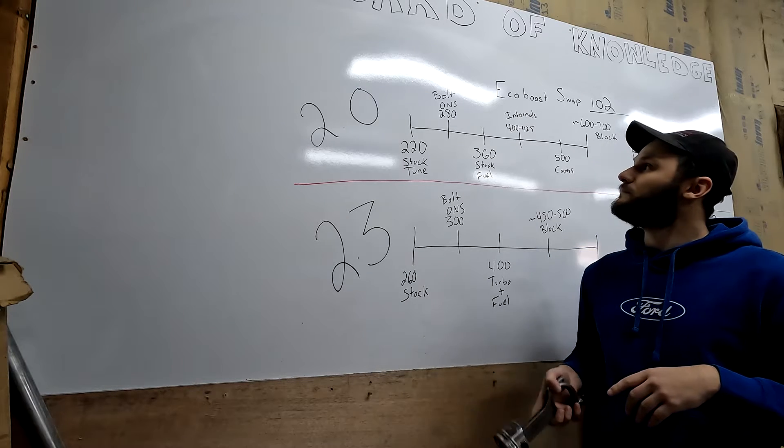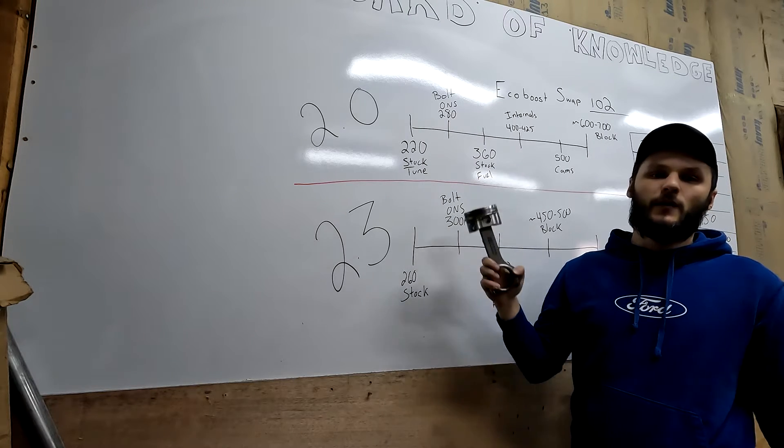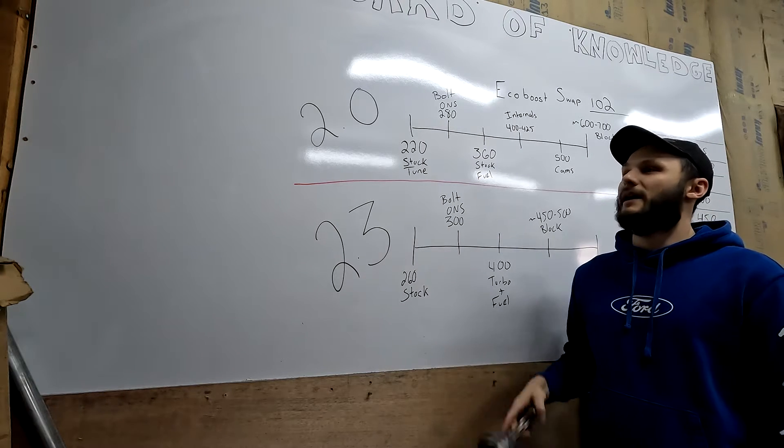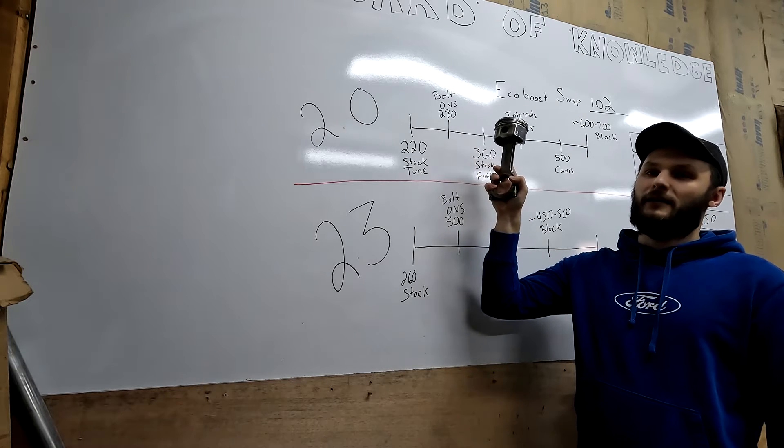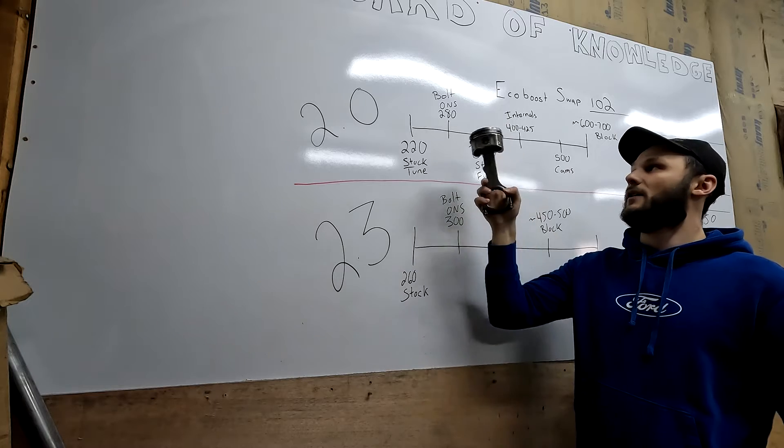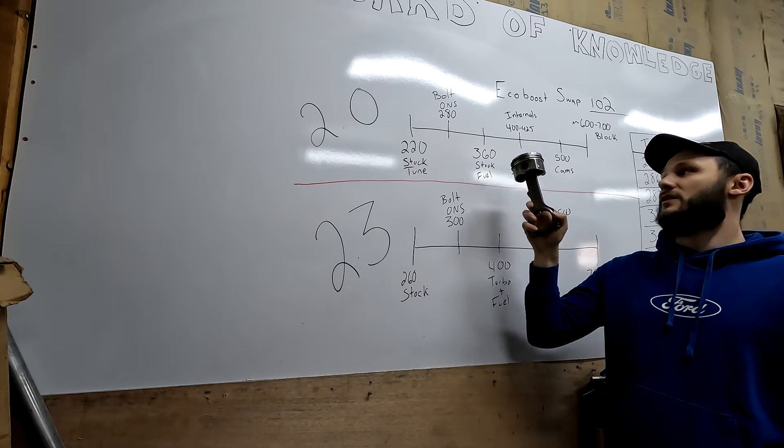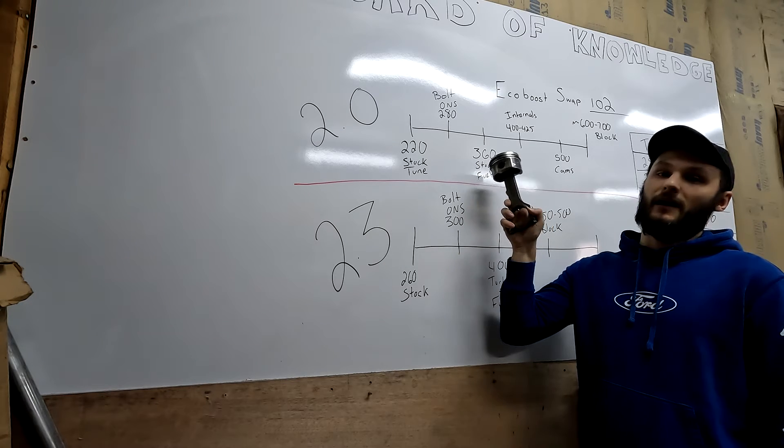With bolt-ons, a 2.0 can put down about 280 with a good tune. You might need an ethanol blend to get to that number. I've made about that on a Focus ST with a stock turbo and stock internals. Next up, you'll hit the stock fuel system limit. You can't get to this limit without an upgraded turbo. The stock turbo is rated at the 280 horsepower mark, but at 360 with an aftermarket turbo, you're gonna run out of fuel.